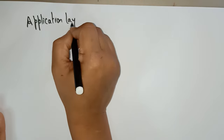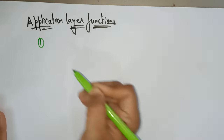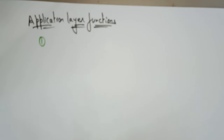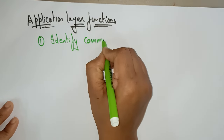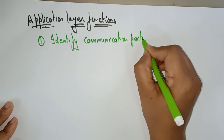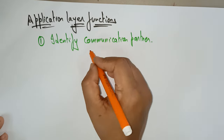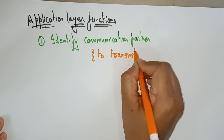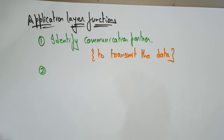Now let's have a look at the application layer functions. The first function is to identify the communication partner. The application layer identifies the communication partner in order to transmit data — it needs to find out where the data needs to be transmitted. In the client-server model, the client requests the server, so it has to identify the communication partner, which is the server, to transmit a query.